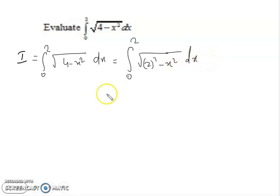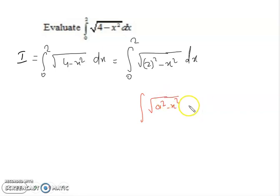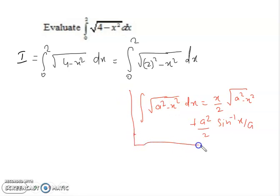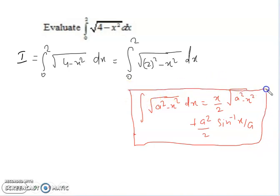We know one very important formula that we can apply here: the integration of under root a square minus x square dx is equal to x by 2 times under root a square minus x square, plus a square by 2 times sin inverse x by a.